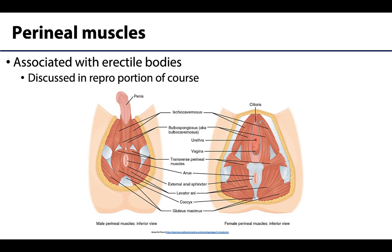The perineal muscles are skeletal muscle as well, and they are associated with covering the erectile bodies related to the clitoris and the penis. The ischiocavernosus and the bulbospongiosus are of particular importance, but this will be discussed in more detail in the reproductive portion of the course.